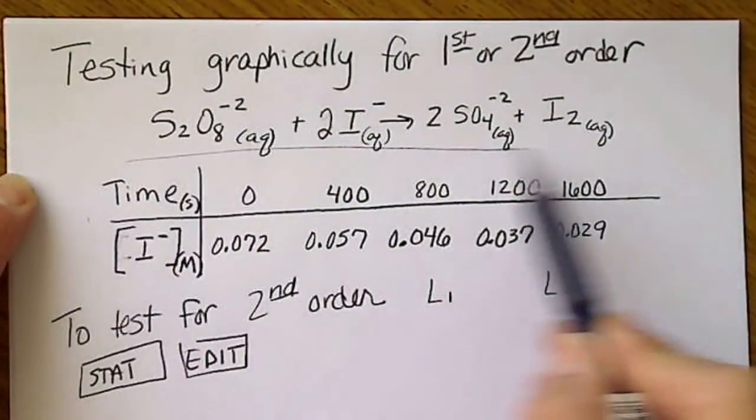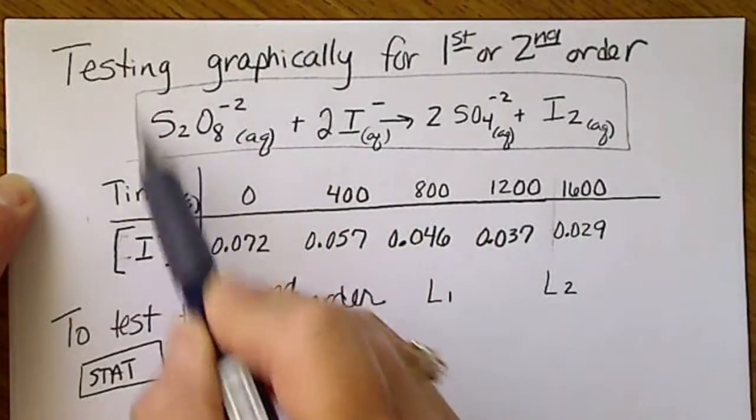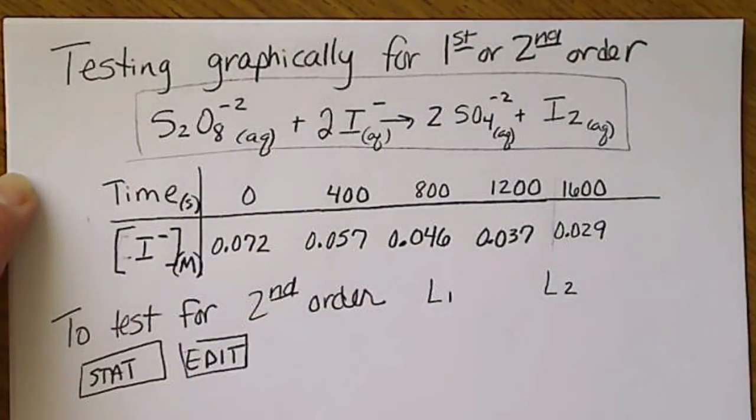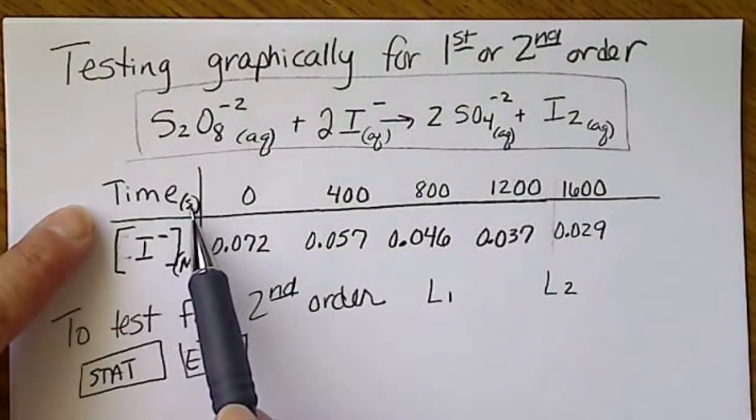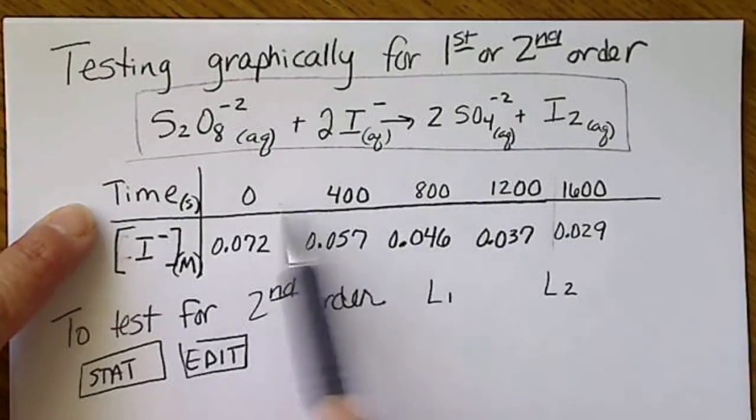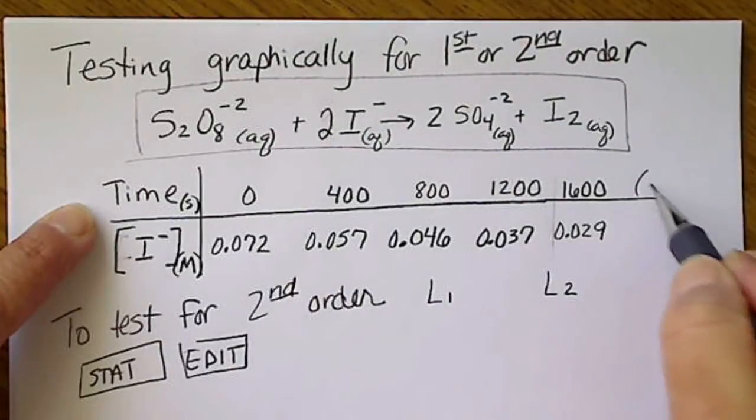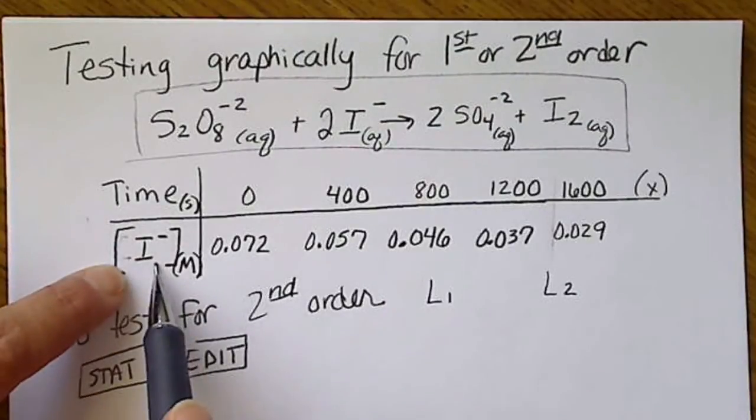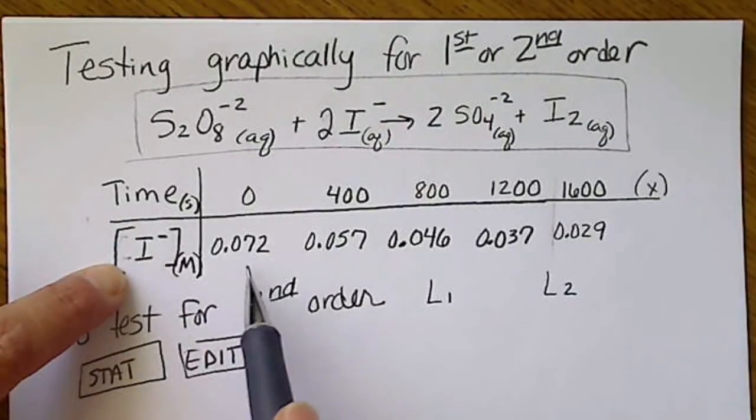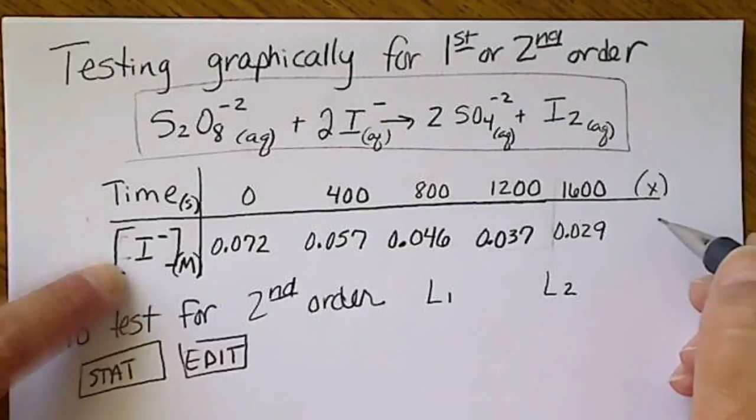So this is a particular reaction that we can run a rate on, and we have time in seconds. This is always going to be represented by the x-axis and then the concentration of the iodide ion is written here in molarity.